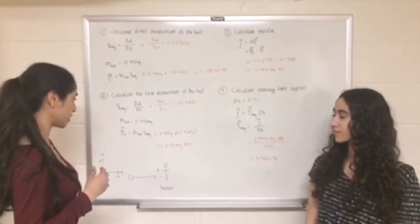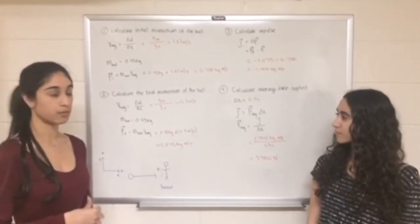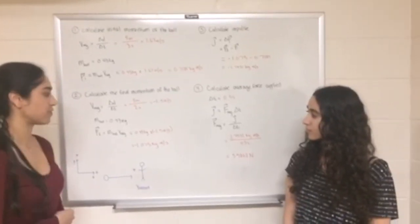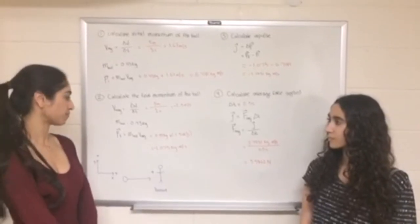Therefore, using this information, we can calculate the final momentum of the ball, which was found to be minus 1.075 kilograms meters per second.